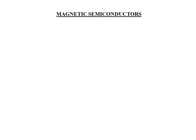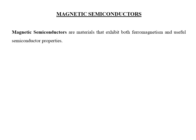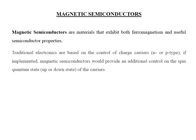Magnetic Semiconductors are materials that exhibit both ferromagnetic property and semiconductor property. If you look at our traditional electronics, they are based on the control of charge carriers. In N-type semiconductors, the majority charge carriers are electrons, and in P-type semiconductors, the majority charge carriers are holes. Our traditional electronics is based on the control of electrons and holes in these materials.